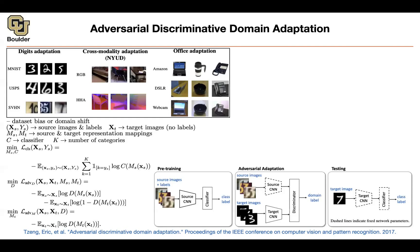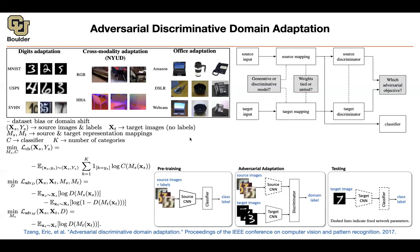After the process is done, the features coming out of your target CNN are not going to give away information about images being target or source, because of this adversarial objective function. When it comes to testing, we care about your target images: you take a target image, push it through your target CNN and classifier, and read off the class labels. Now, what is the contribution here? This pre-training step is a contribution. The other contributions are systematic studies. Should the models be generative or discriminative? We are going to see a generative model in the next slide. Generative means generating images at the pixel level; this approach is discriminative.